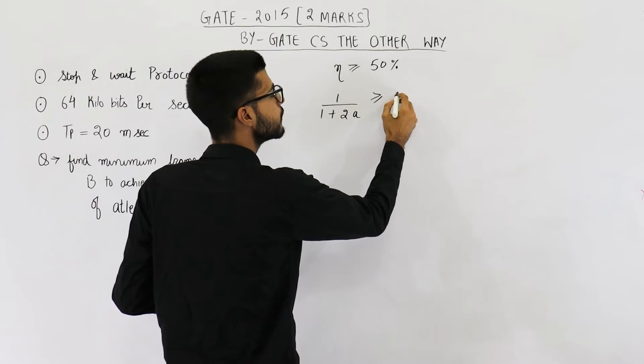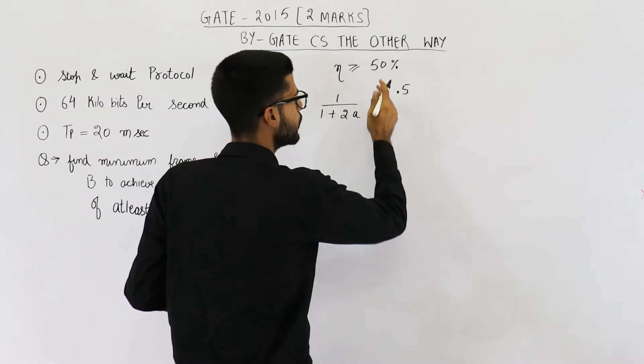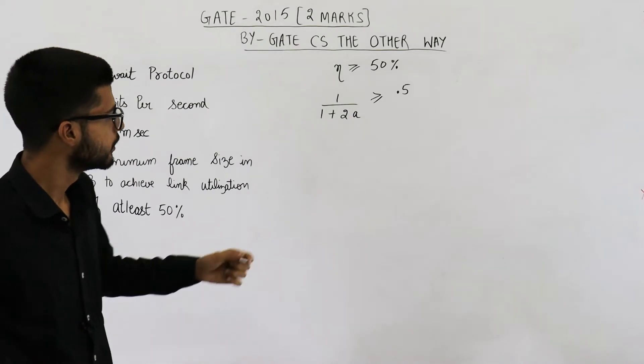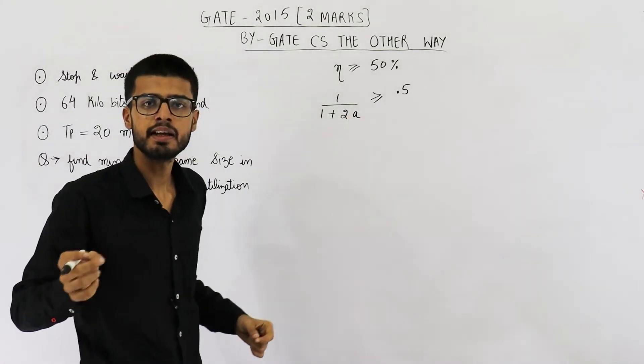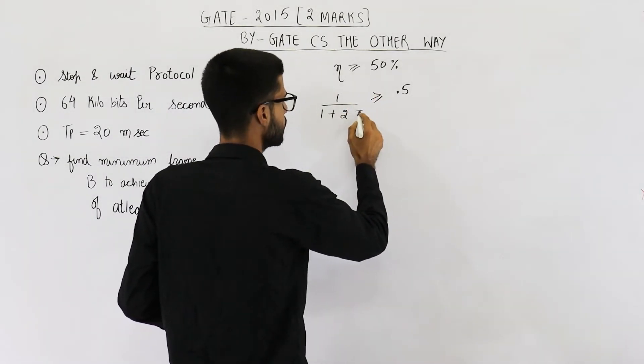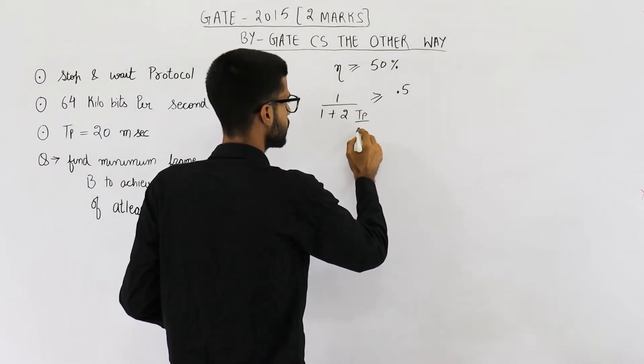This will be greater than or equal to 0.5 because 50% is same as writing 0.5. Now value of a is Tp divided by Tt. The propagation delay divided by transmission delay.